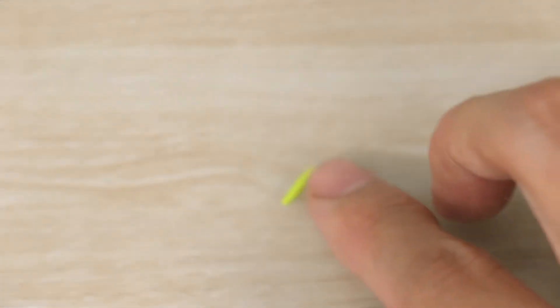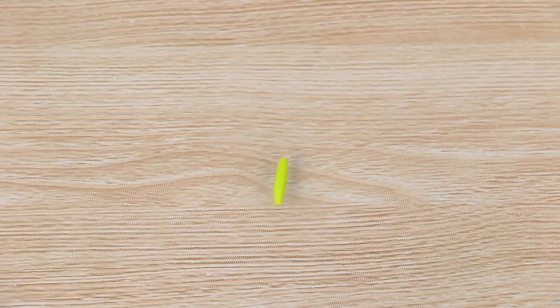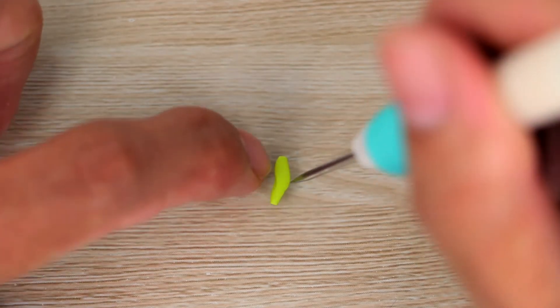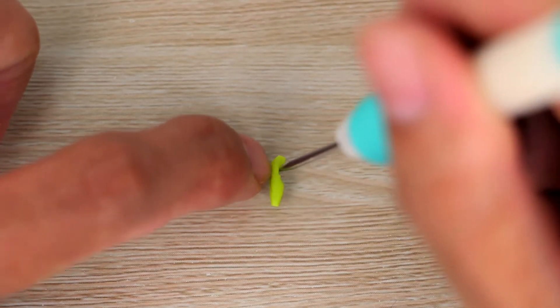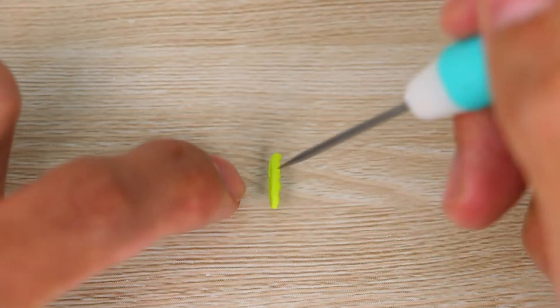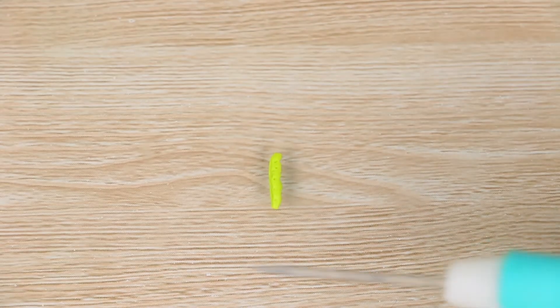So now to make the seaweed, I'm rolling a small ball of some bright green clay into a snake, and then flattening that down with my finger. Then with my needle tool and finger, I'm pressing some ridges on either side and then scratching some short lines on the surface.